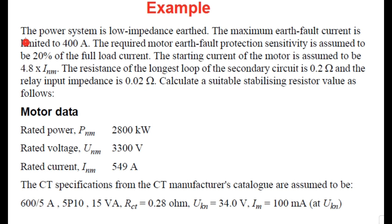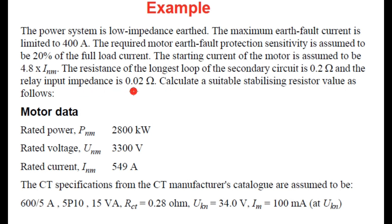The power system is low impedance earth and the maximum earth fault current is 400 A. The required motor earth fault protection sensitivity is 20% of full load current. The starting current of the motor is 4.8 times the nominal current, i.e., 4.8 × 549 A. The resistance of the longest loop of the secondary circuit is 0.2 Ω and the relay input impedance is 0.02 Ω.